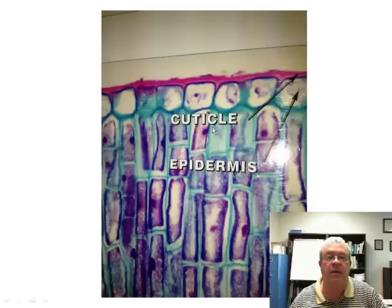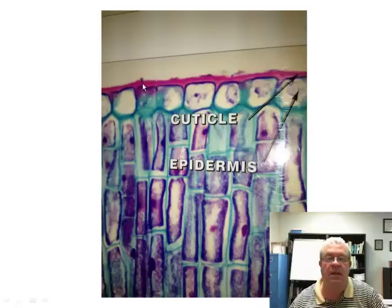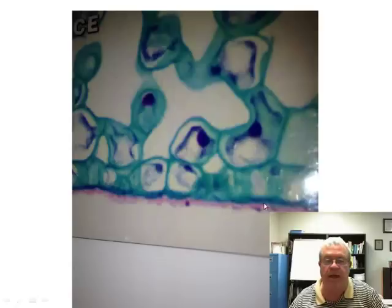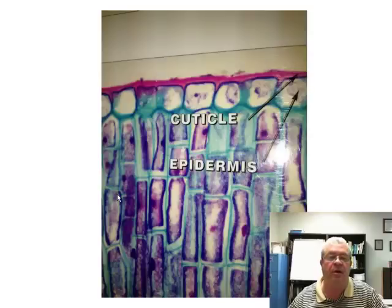Let's take a closer look. There it is — stained pink, a layer across the top of this little lilac leaf. And what is that? Well, here's the giveaway: that is, in fact, the waxy cuticle on the aerial parts. If we look at the bottom of the leaf, you see the same thing — not quite as thick, or maybe it didn't take the stain quite as well. But there you have it: the waxy cuticle on the aerial parts.